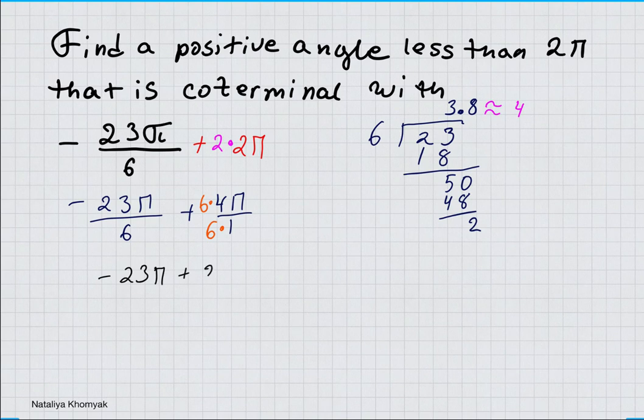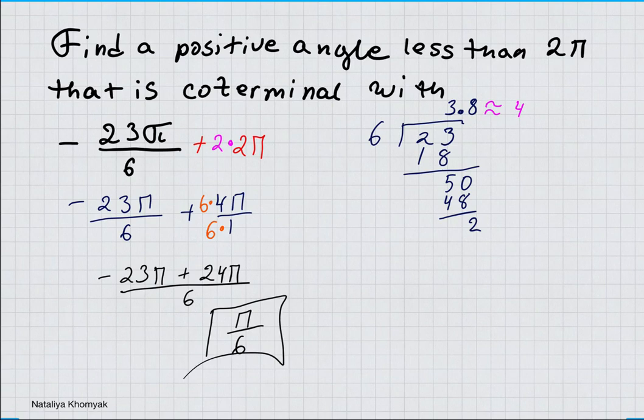The difference between negative 23 and positive 24 is 1. So we have π/6. π/6 is positive and it's less than 2π, so this is our solution.